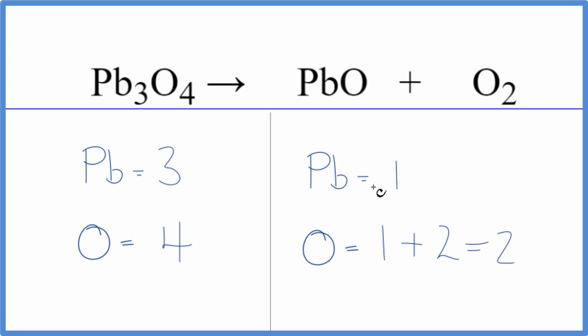So we could balance the lead, put a 3 here, 1 times 3, 3 of those. Let's update the oxygens. So now we have 3 times 1, that's 3, plus the 2, that gives us 5, which is kind of annoying.